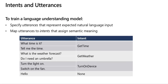Let's talk about intents and utterances. Utterances are the phrases that the user might enter when interacting with an application that uses your language understanding model. An intent represents a task or action that the user wants to perform, or more simply, the meaning of an utterance. You create a model by defining intents and associating them with one or more utterances.